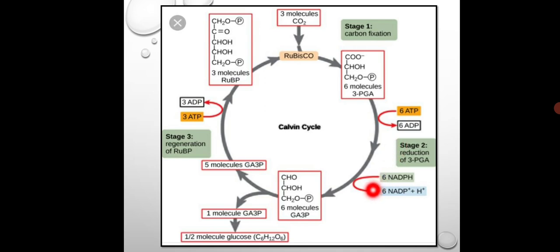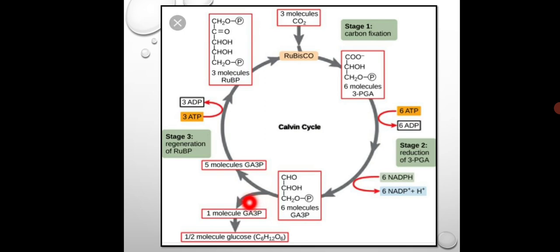Then there is the reduction process. It requires ATP and NADPH which were produced in the light reaction. The six molecules get converted into six molecules of glyceraldehyde-3-phosphate. Then one molecule of G3P is converted into glucose, and the rest five molecules are regenerated back to RUBP. This regeneration process requires many intermediate reactions.